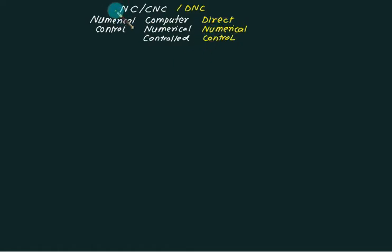In the NC machine, we are using the cards and the cards are previously punched as per the part programming required and then that card is fed to the machine. According to the card program, you will get the job done, whatever operations are there.